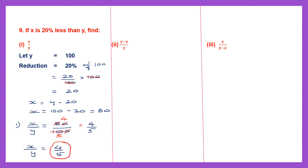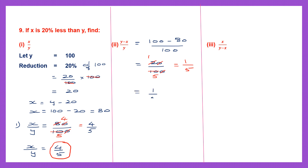The second question is (y minus x) by y. That is 100 minus 80 divided by 100, which is 20 by 100. Cancelling the zeros and then 2 and 10: 2 ones are 2 and 2 fives are 10, giving us 1 by 5. So the answer to the second part is 1 by 5.